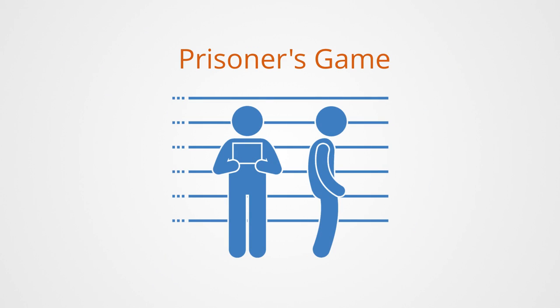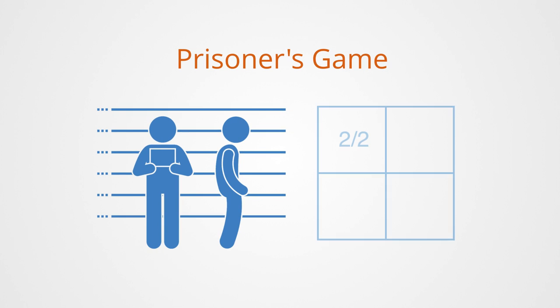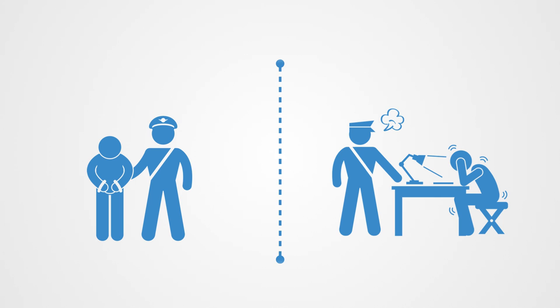Nash equilibrium is best illustrated through the prisoner's dilemma game. The prisoner's dilemma game is a classic two-player game that is often used to present the concept of Nash equilibrium in a payoff matrix form. Conceive of two prisoners detained in separate cells.